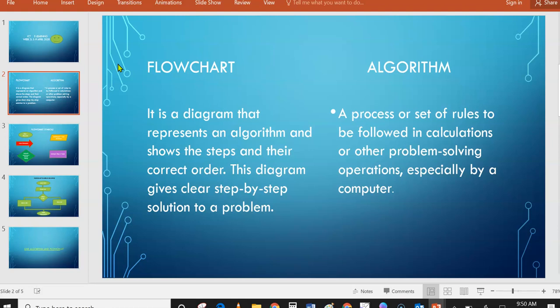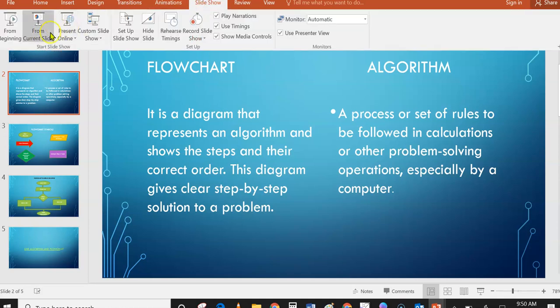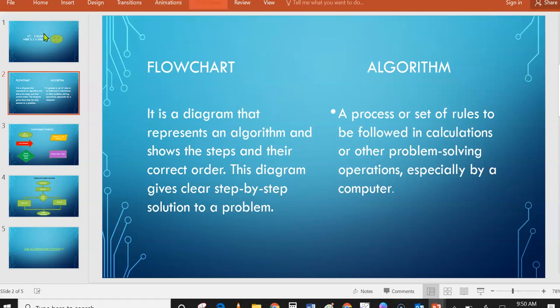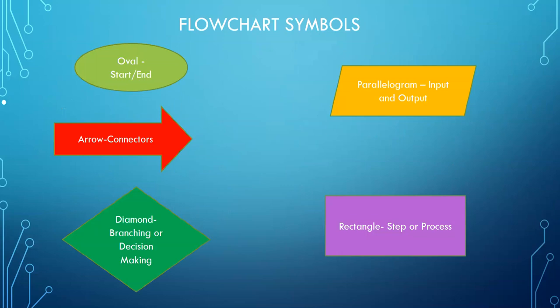Now I'm going to have you read the flowchart symbols. First you have the oval. To start a flowchart it should begin with an oval, and when you finish a flowchart diagram it should also end with an oval symbol.